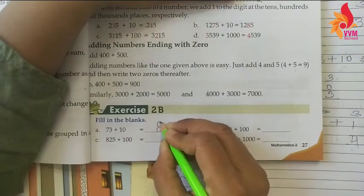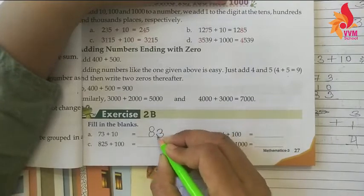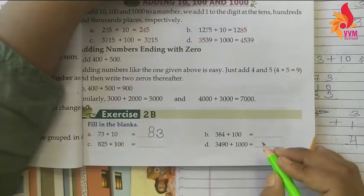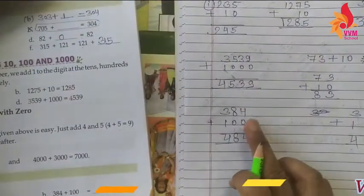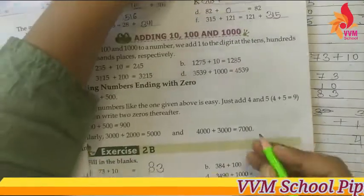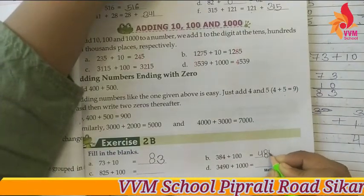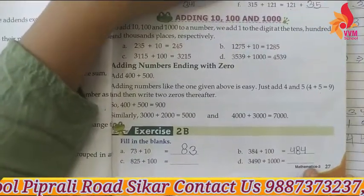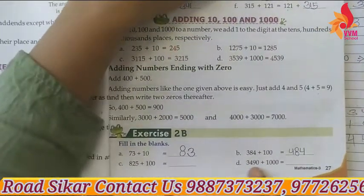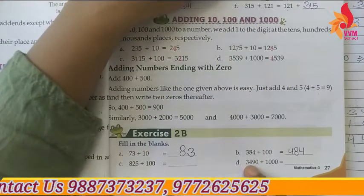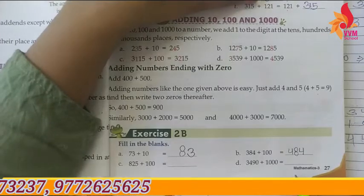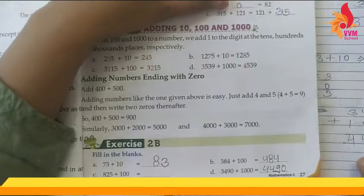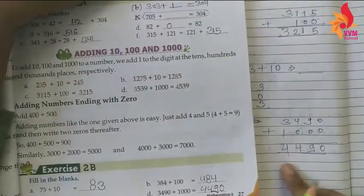83 aaye. Phir dekho: 384 mein 100 add kiya to answer kya aaya aapke paas? Answer tha 484. Phir next dekho: 3490 mein 1000 add kiya to answer kya hai? 4490 — jaise abhi yeh wala question tha.